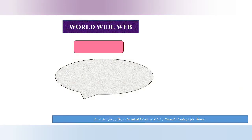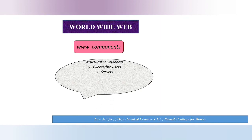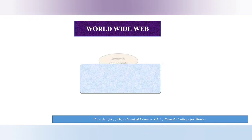WWW components are of two types: structural components and semantic components. Structural components include the client or browser, which handles dominant implementations; servers, which run on sophisticated hardware; caches, which have many interesting implementations; and the internet, which is the global infrastructure facilitating connectivity.